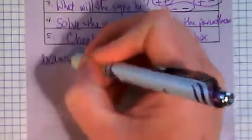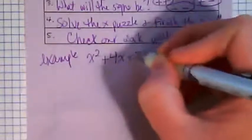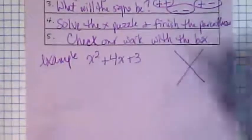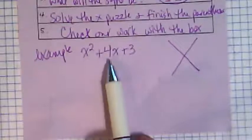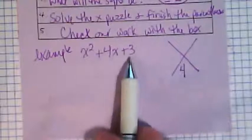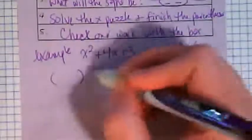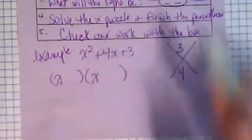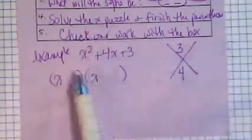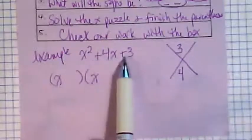So let's do this example. We're going to do X squared plus 4X plus 3. Let's make an X puzzle over here. We're going to take this added term, the 4, and it goes here. This is the multiplied term and it goes here. And we're going to make some parentheses. X goes here, X goes here. We want to ask ourselves,